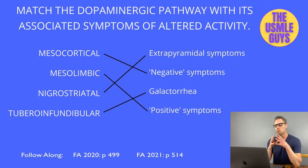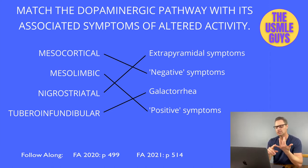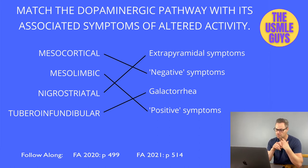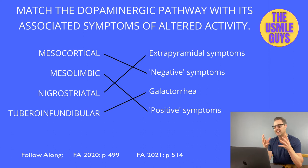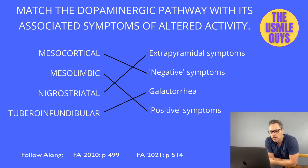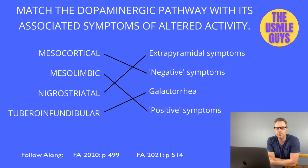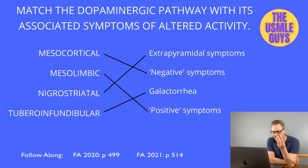First, the mesocortical pathway — when activity decreases, it leads to negative symptoms such as apathy or flattened affect. Next is the mesolimbic pathway — increased activity is associated with positive symptoms, which are the target for most antipsychotic medications. Positive symptoms are things added; negative symptoms are things taken away. The nigrostriatal pathway — when activity decreases, it's associated with extrapyramidal symptoms like dystonia, Parkinsonism, tardive dyskinesia, and akathisia. The tuberoinfundibular pathway — when activity decreases, it leads to increased prolactin, resulting in decreased libido, decreased sexual function, galactorrhea, and gynecomastia.